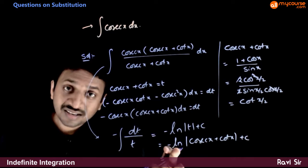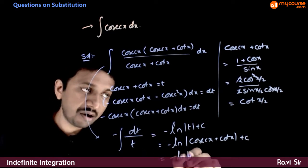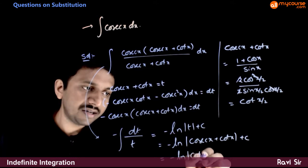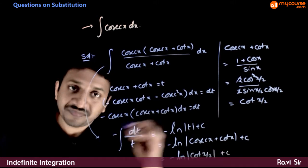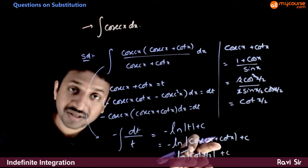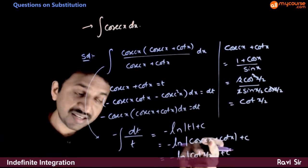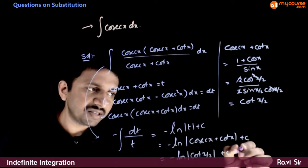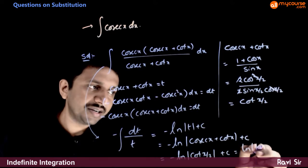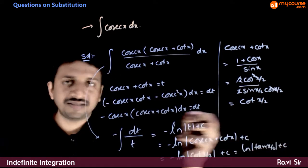So this integration can also be written as minus ln of |cot(x/2)| plus c. If the minus goes inside, it becomes a power of minus 1, which is the reciprocal, so this becomes log|tan(x/2)| plus c.